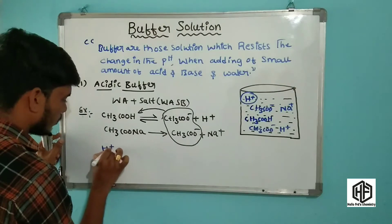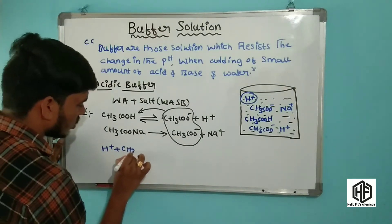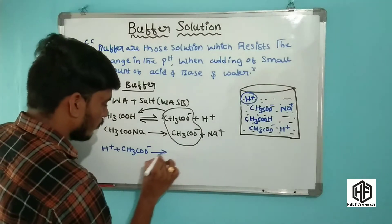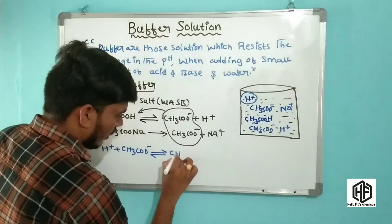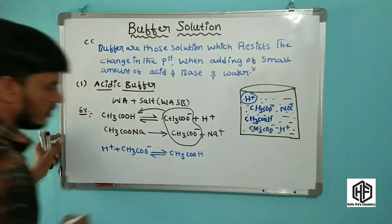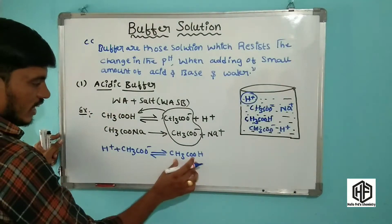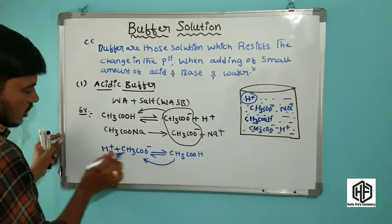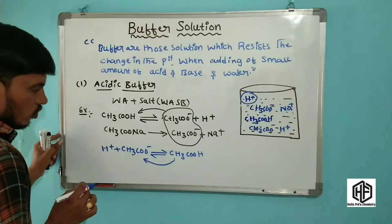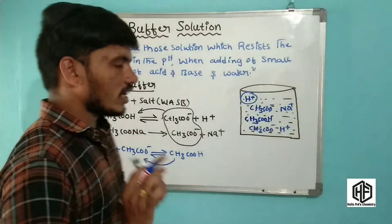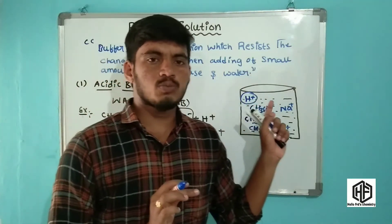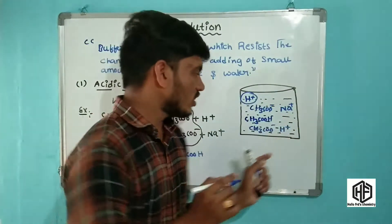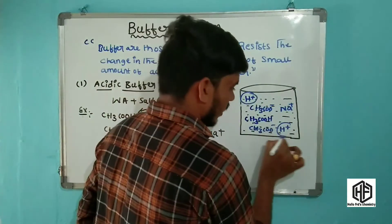The weak acid CH3COOH dissociates to form CH3COO- plus H+. This is the weak electrolyte. The salt of weak acid and strong base is CH3COONa. This salt is a strong electrolyte. It dissociates to form CH3COO- plus Na+.